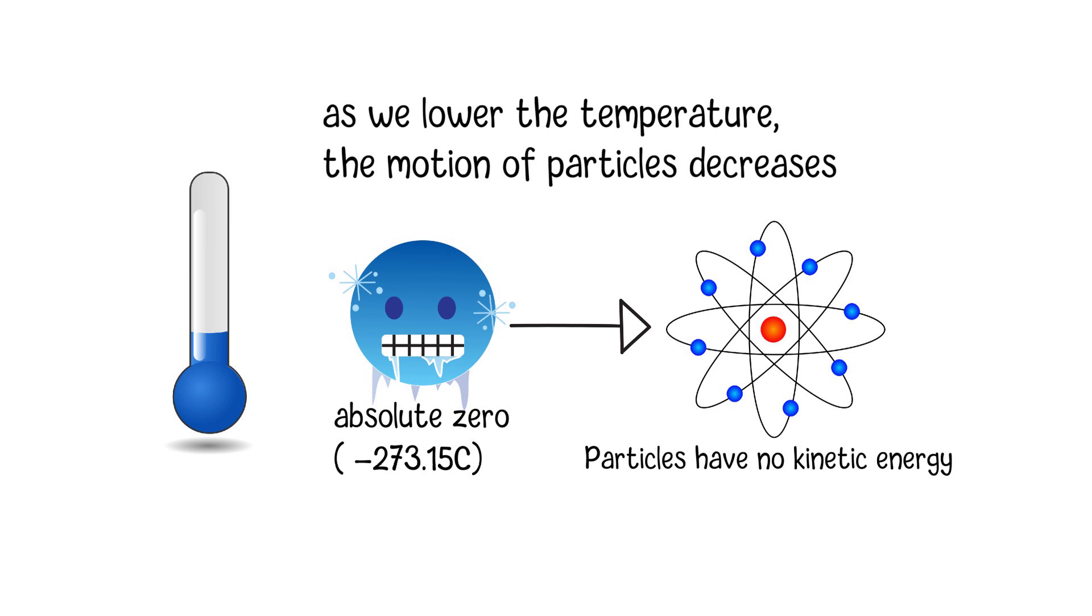In other words, at absolute zero, all particles will stop moving and their movement speed is zero. Since there is no negative speed, we cannot lower the speed of particles further. This means absolute zero is the lowest temperature in the universe.